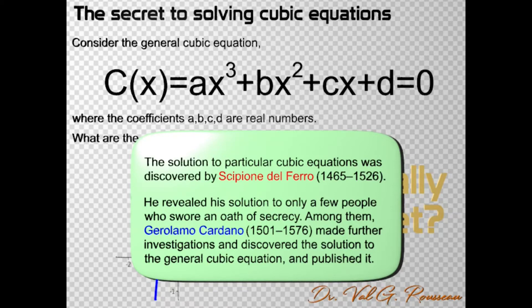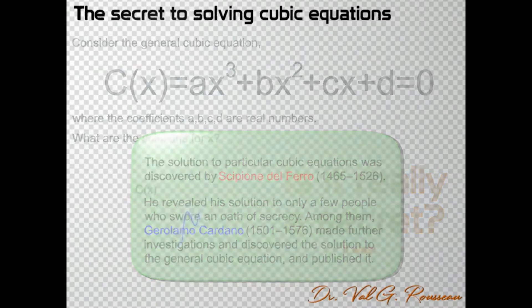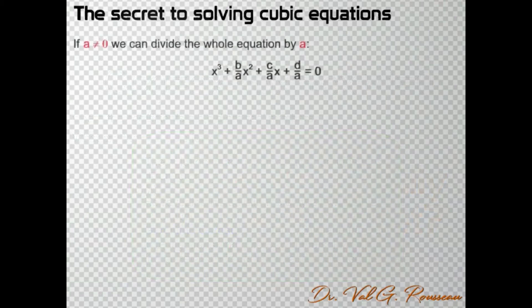Alright, consider the general equation ax³ + bx² + cx + d = 0, where the coefficients a, b, c, d are real numbers. We can safely assume that a is non-zero, otherwise that wouldn't be a cubic equation.